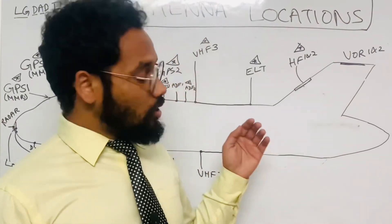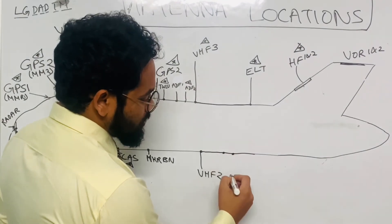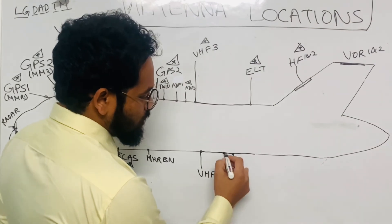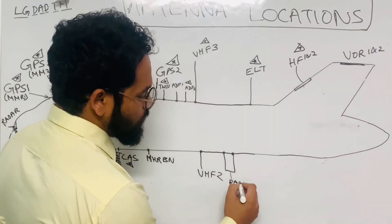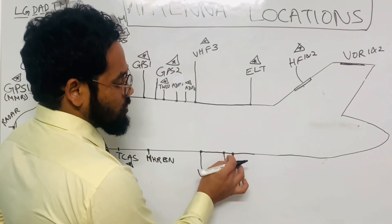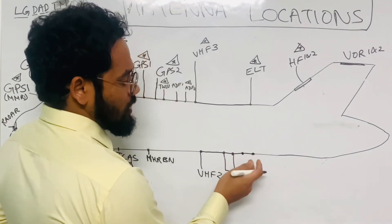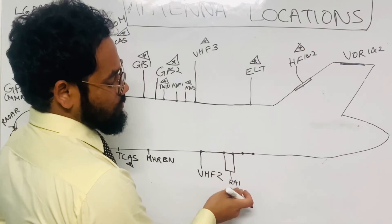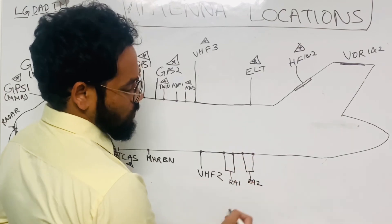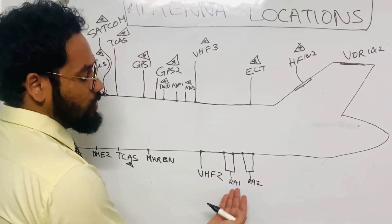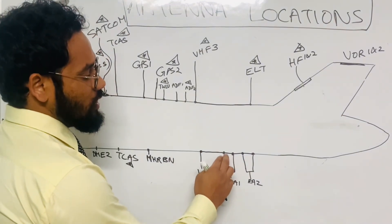For radio altimeter antennas, look at the bottom of the fuselage in the aft section. There are two antennas for RA 1 — Radio Altimeter System 1 — one transmitter and one receiver. Next to those are two more antennas for RA 2 — Radio Altimeter System 2 — also transmitter and receiver. So four antennas total on the bottom aft fuselage for the two radio altimeter systems.